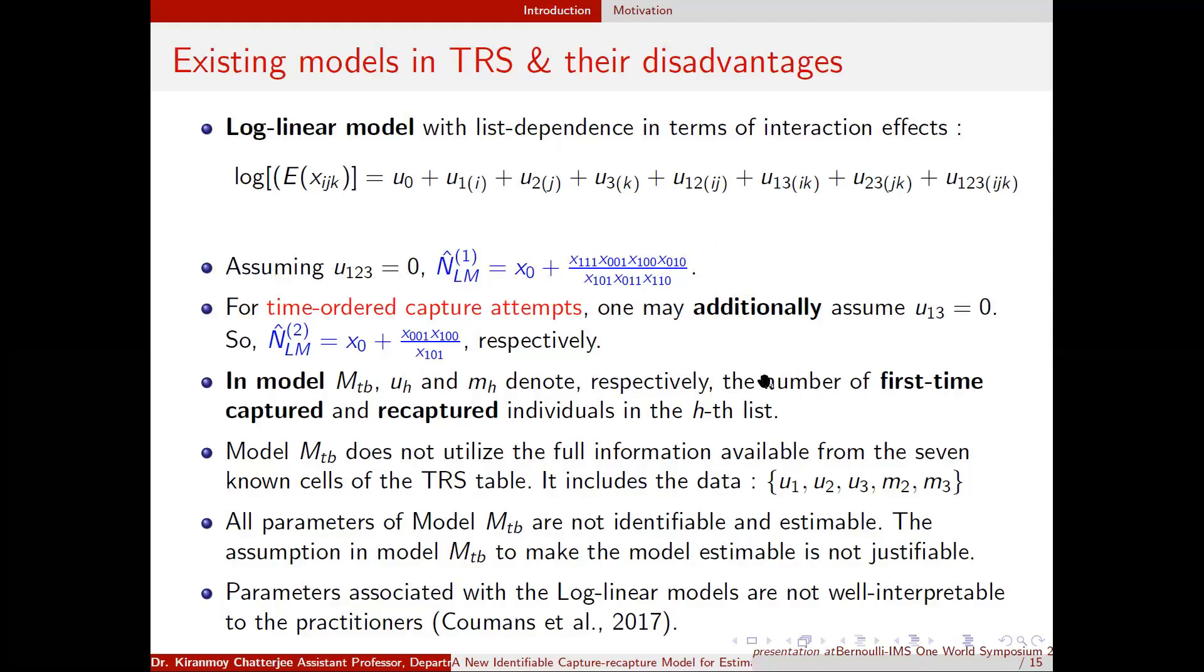Further, if anyone additionally assumes that U13, which means interaction between first list and third list, equals to zero, then in addition to the assumption of U123 equals to zero, they will get these estimates.